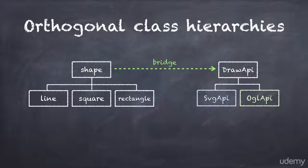In this new design, the shape class acts as a bridge between the shapes and the drawing API. It holds a reference to an instance of draw API and defines an abstract high-level drawing interface. The line, square and rectangle classes inherit from shape and implement the high-level drawing interface by calling the low-level drawing interface provided by the draw API class.